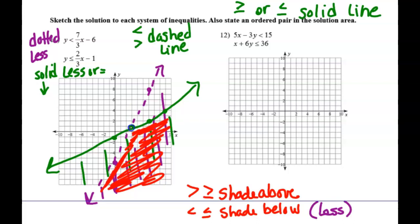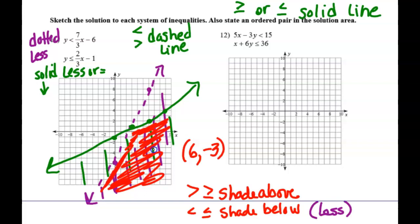Sometimes the point where they intersect would work, but it doesn't here because this was a dotted line, so it isn't included. Delta Math asks you to find one ordered pair that works, so you need to give one ordered pair in the double-shaded region. Anything down there will work — like 6, negative 3. Delta Math will accept anything within that double-shaded region.